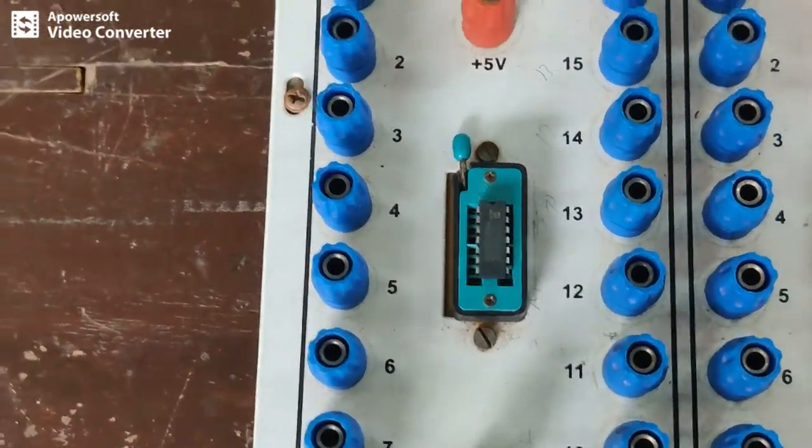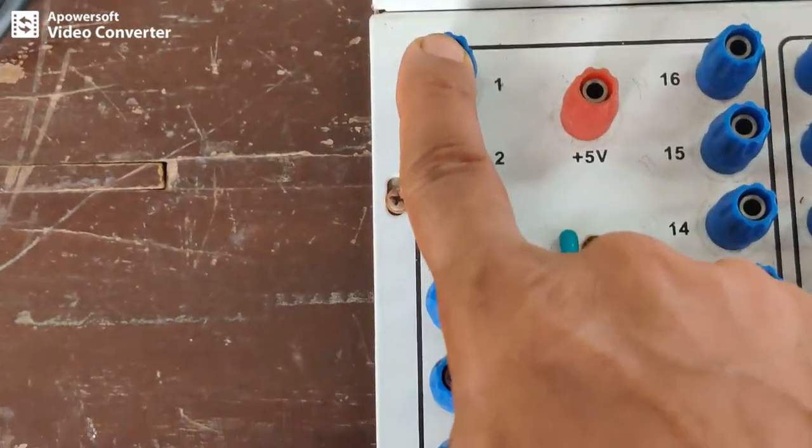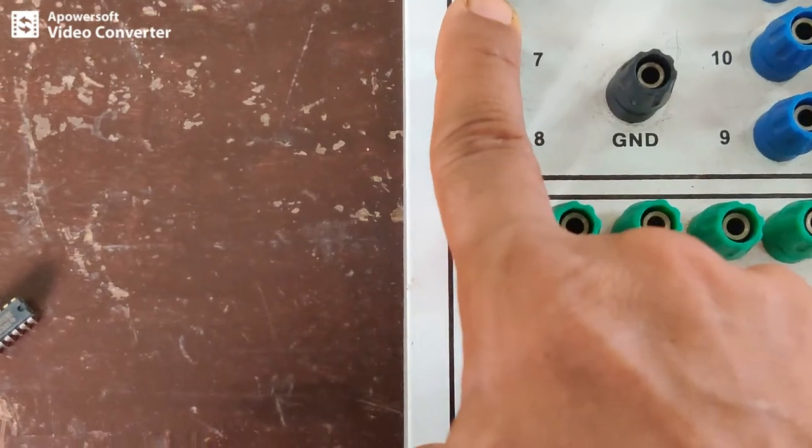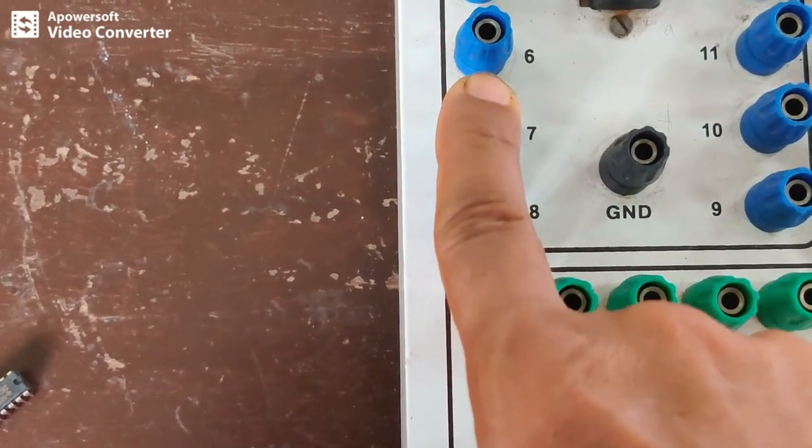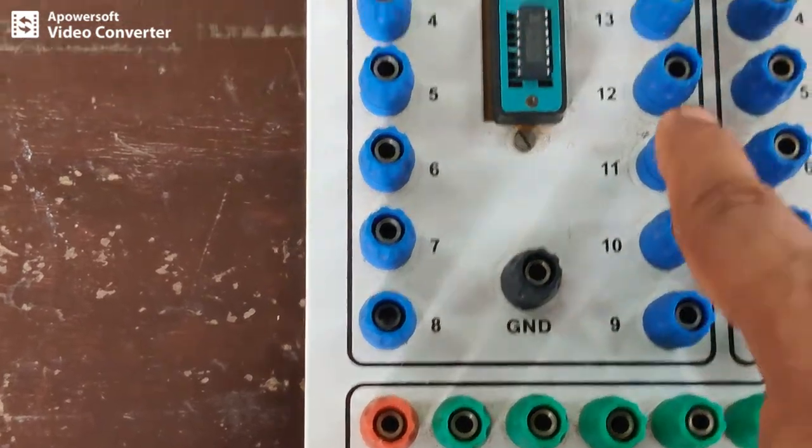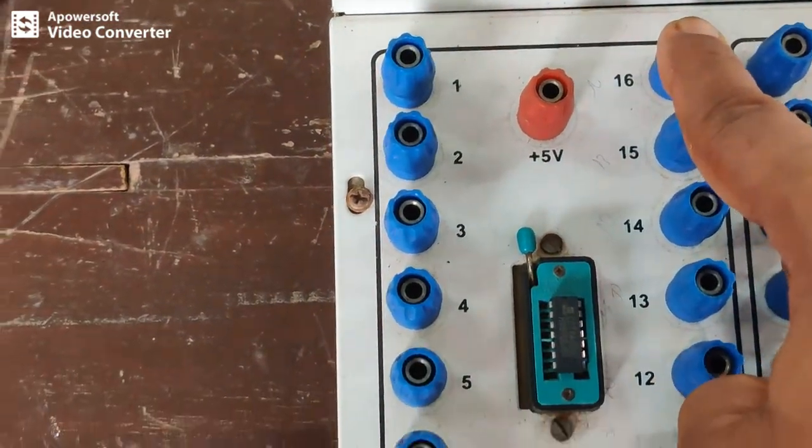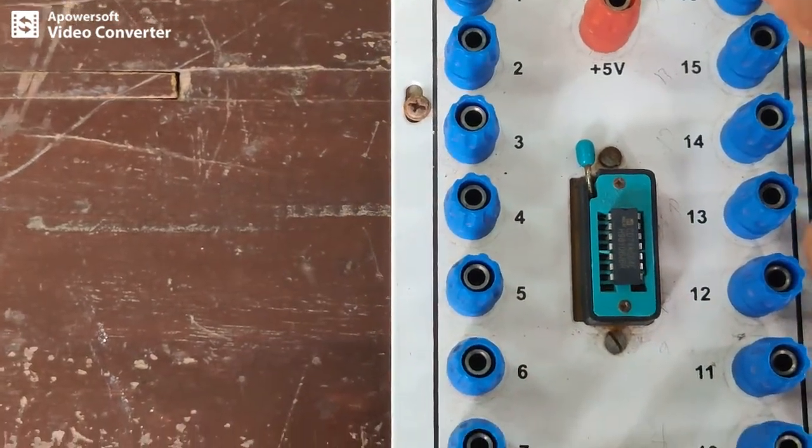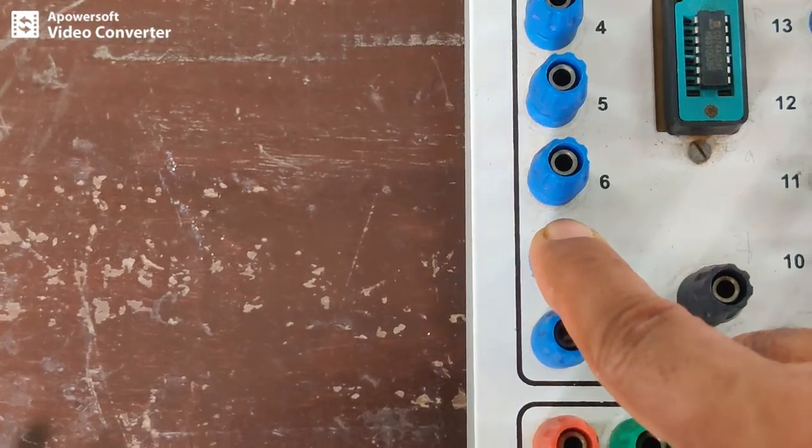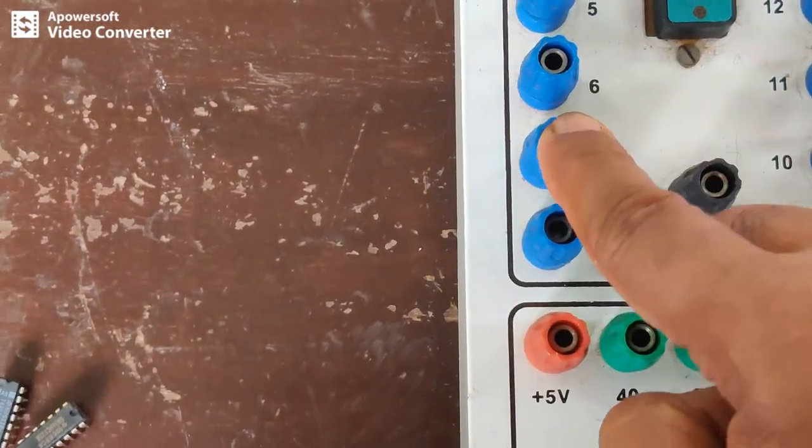Now how to do the connectivity? Here, this is pin number 1, pin number 2, 3, 4, 5, 6, 7. Since it is a 14 pin IC, after 7, this is 8, 9, 10, 11, 12, 13, and 14. And 14 is called VCC and pin 7 is called ground for this IC.